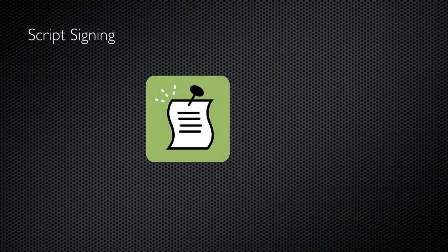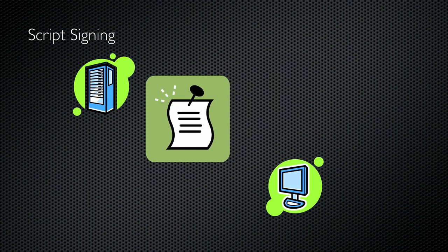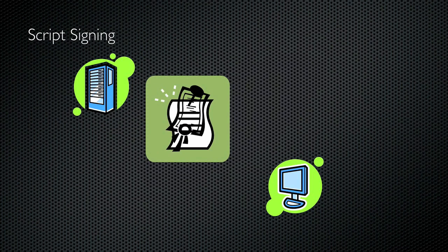Here's an overview of how it works. Let's say you've got a script and a computer you want to run it on. Somewhere out there is a CA — a certification authority — and it might be an internal CA or a commercial one like VeriSign. That CA produces a digital certificate for you, which you use to digitally sign your script.